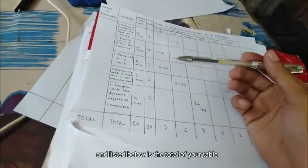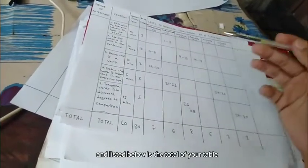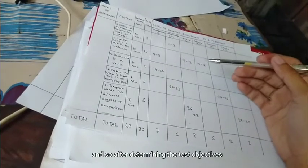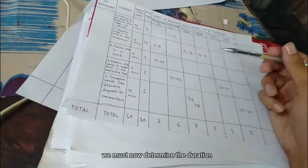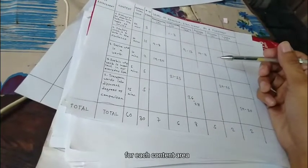And listed below is the total of your table. And so after determining the test objectives for each topic, we must now determine the duration in each content area.